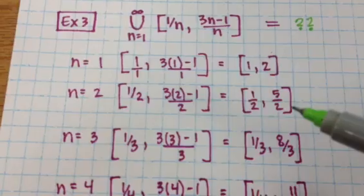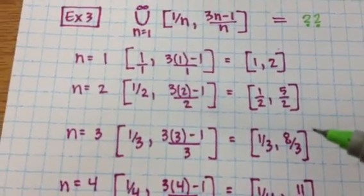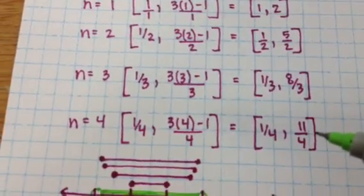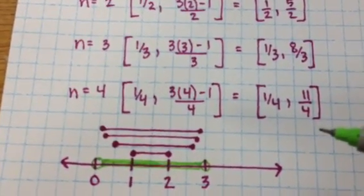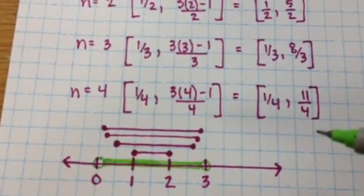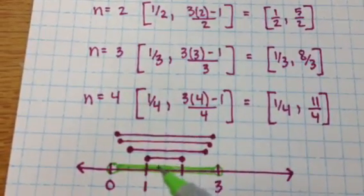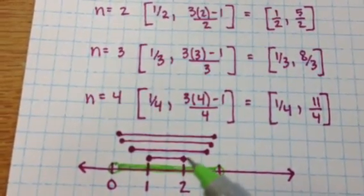And the idea with an infinite union is that you're just going to keep doing this for n equals 3, n equals 4, n equals 5, all the way until n equals a billion and then a gazillion and then, you know, it's going to go to infinity. So what happens is that we have these little closed intervals and since it's the union, you're taking everything.